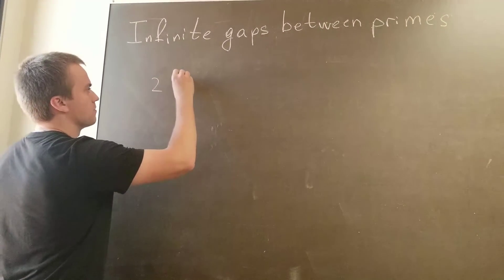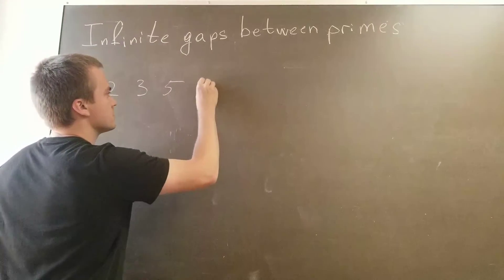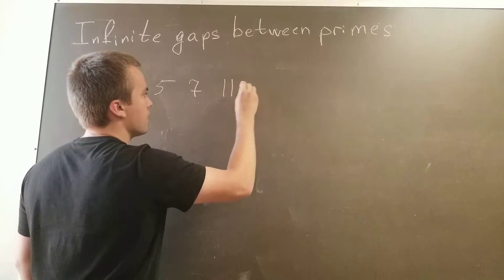Let's make a list of prime numbers: 2, 3, 5, 7, 11, 13.